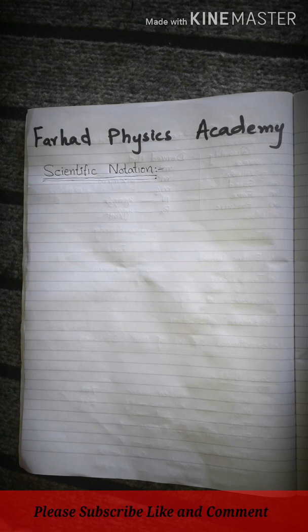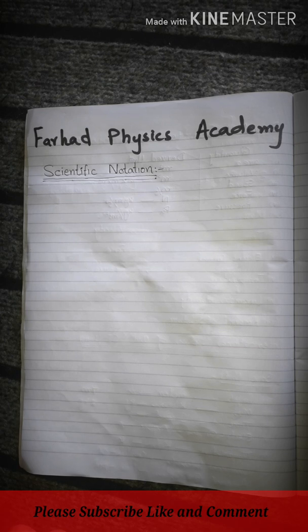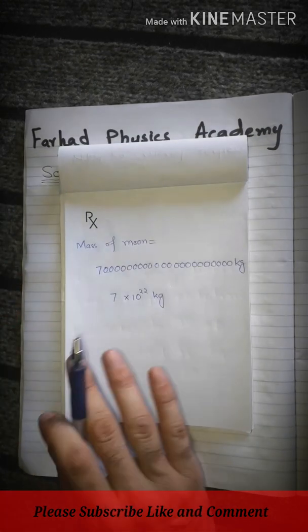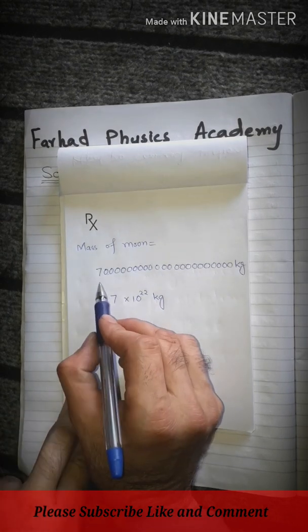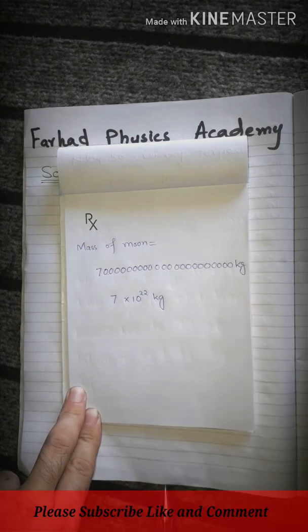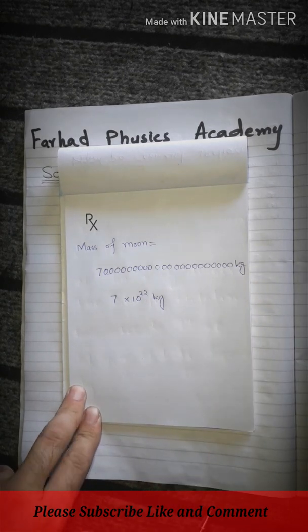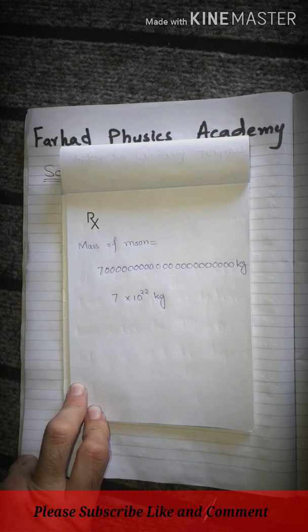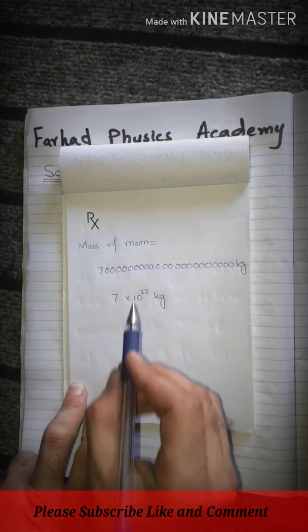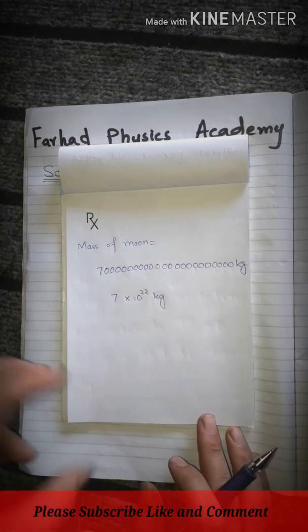So what is scientific notation? When we have a very large number or a very small number, and we want to write that number in easy words, we use scientific notation. For example, let's take the mass of the moon. This is a very large number. Writing this number repeatedly is very difficult. So we have an easy way to write this. That's called scientific notation, meaning the number is shortened. It's written in short form using power of 10.